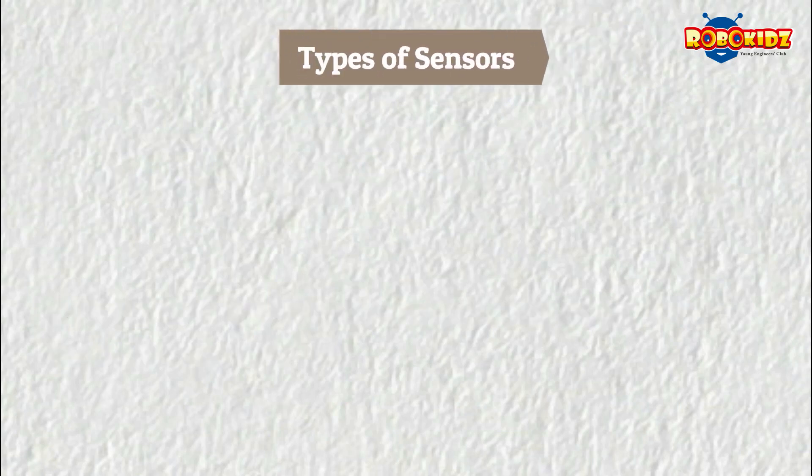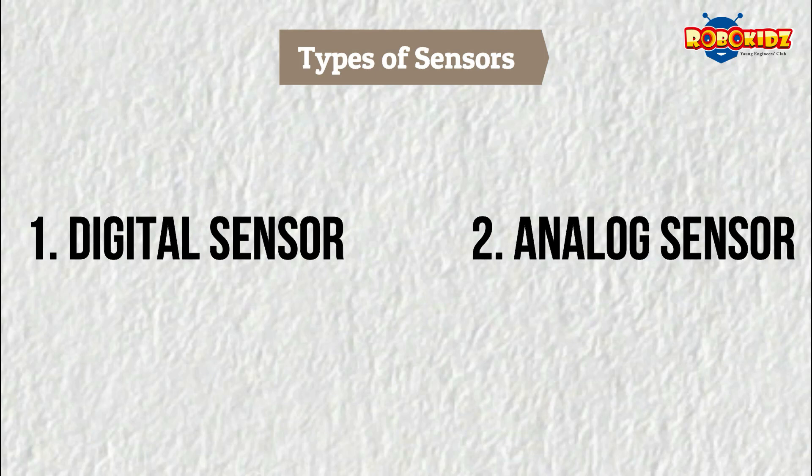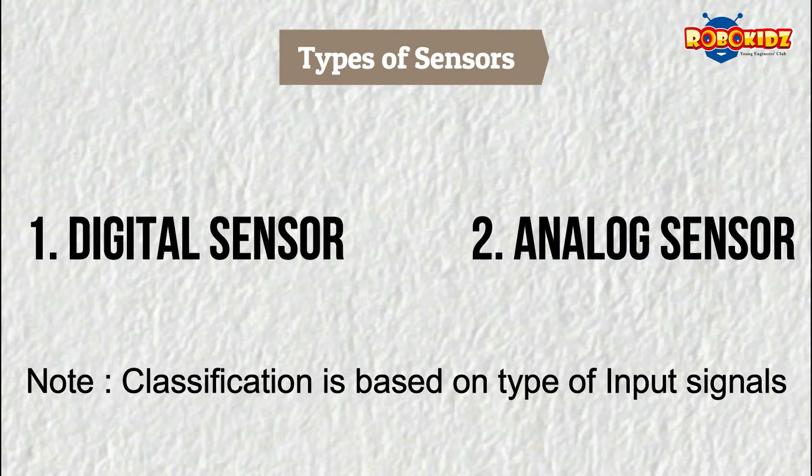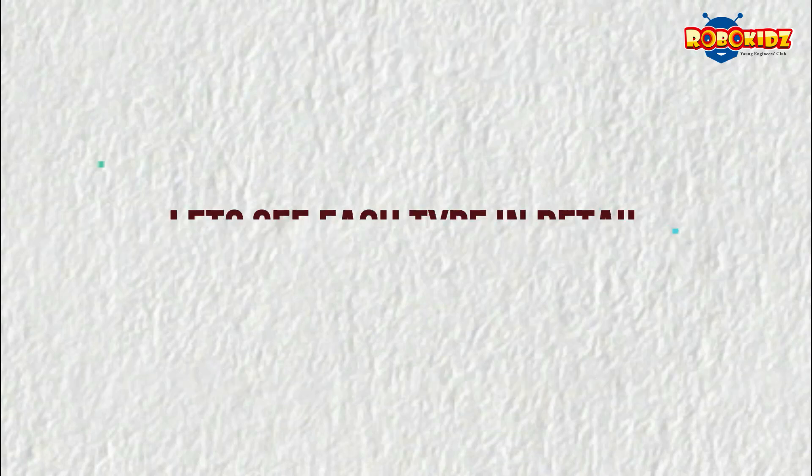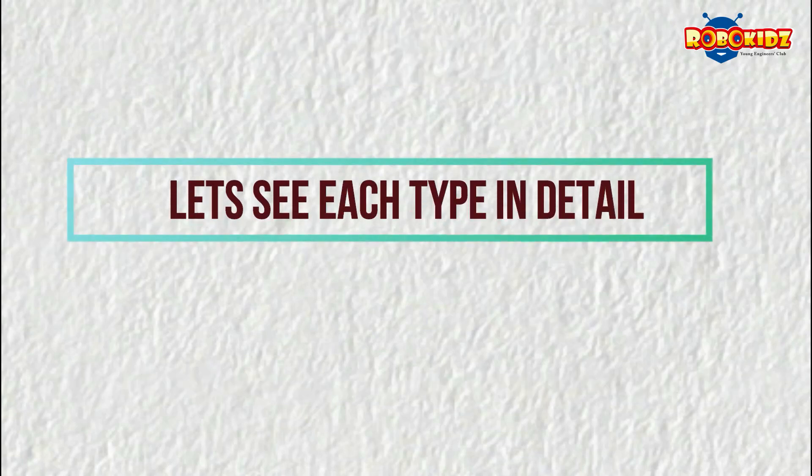Next, let us see the types of sensors. Sensors are classified as digital sensors and analog sensors. Please note that this classification is only based on the type of input signals, not on the type of parameters they measure. Let's see each type in detail.